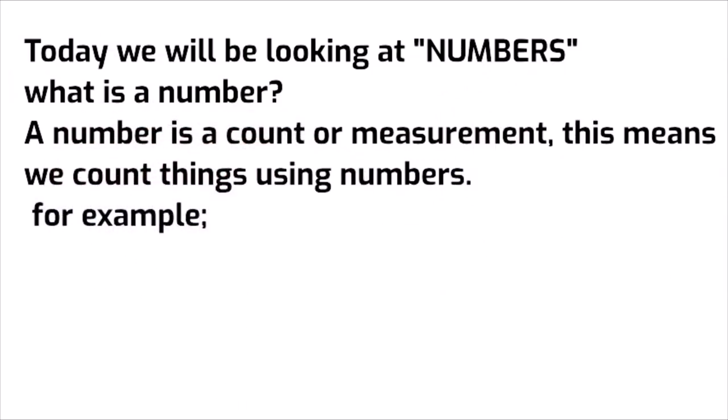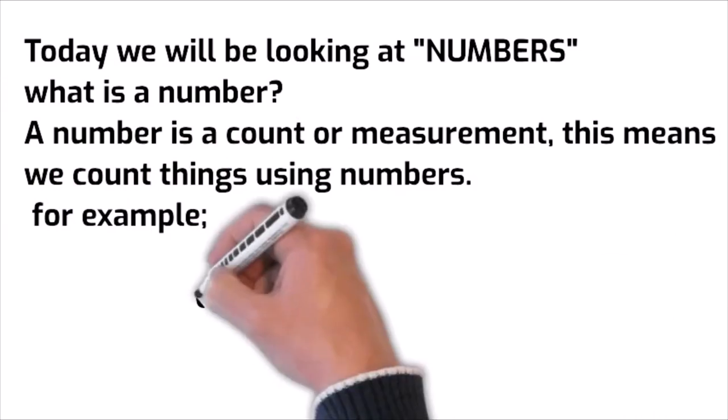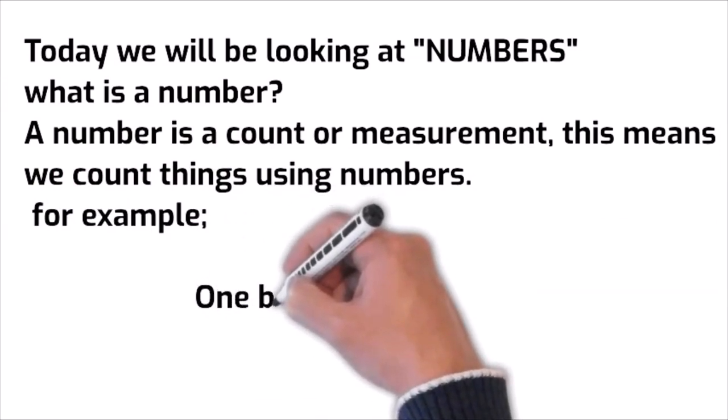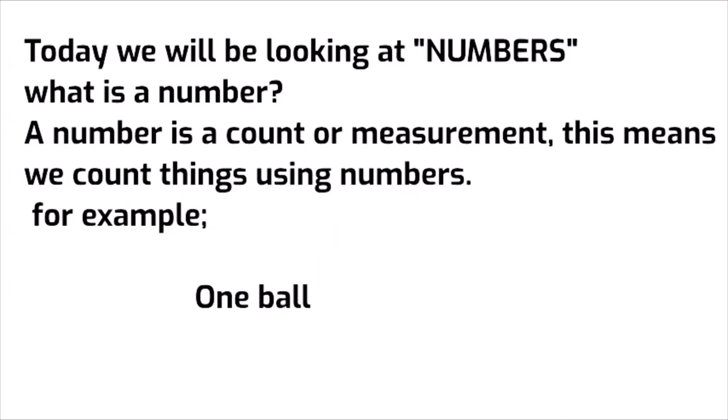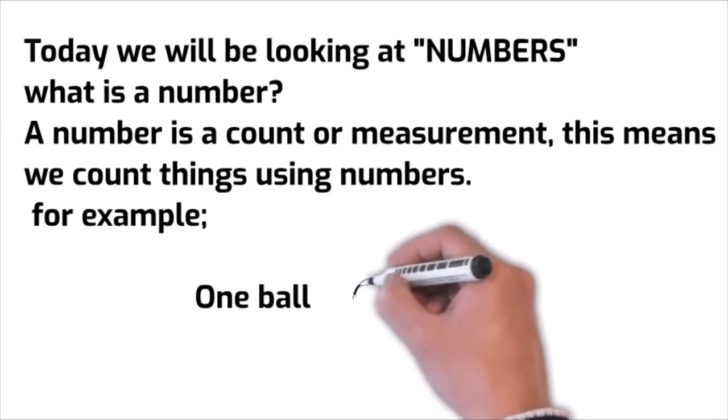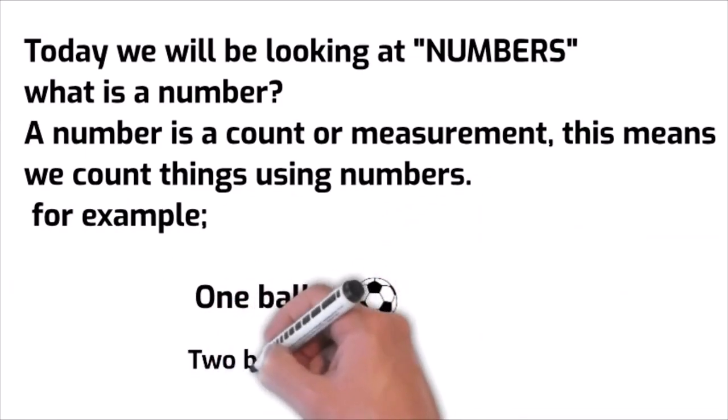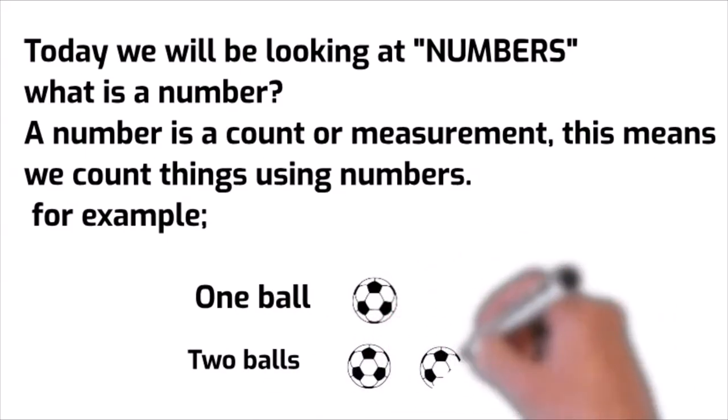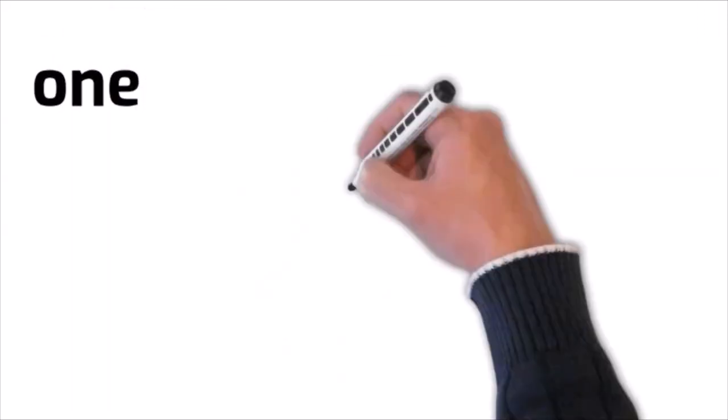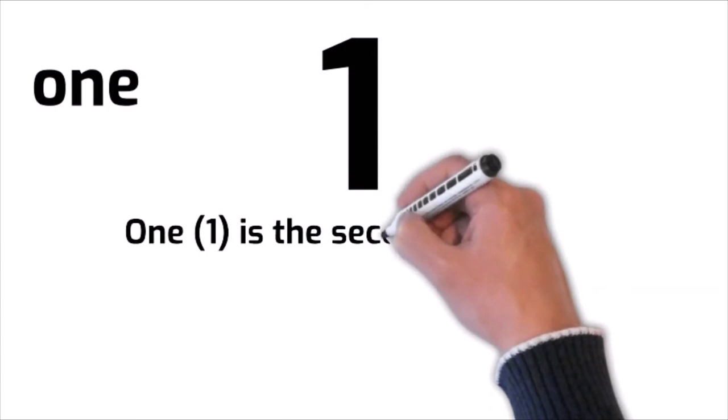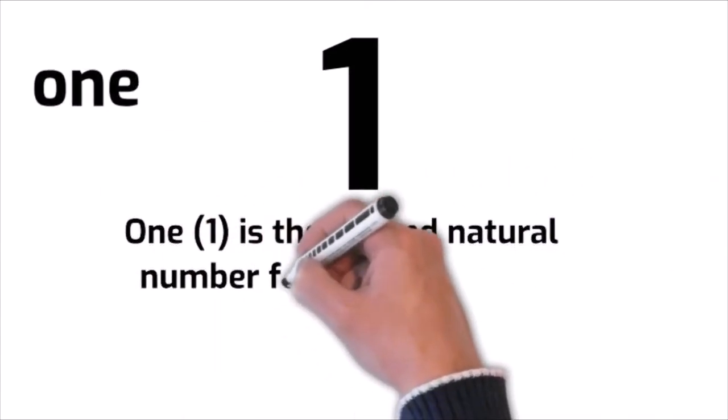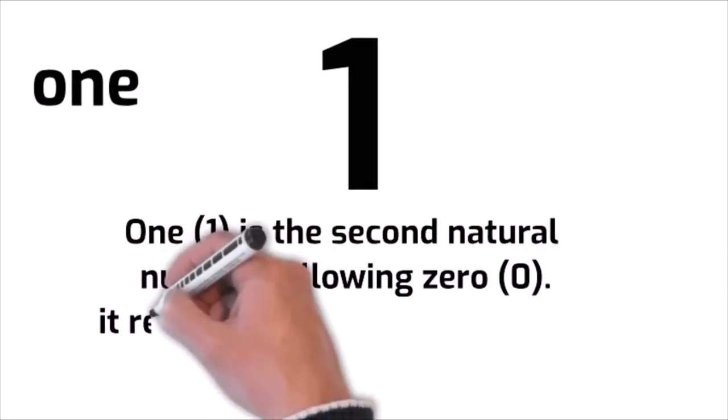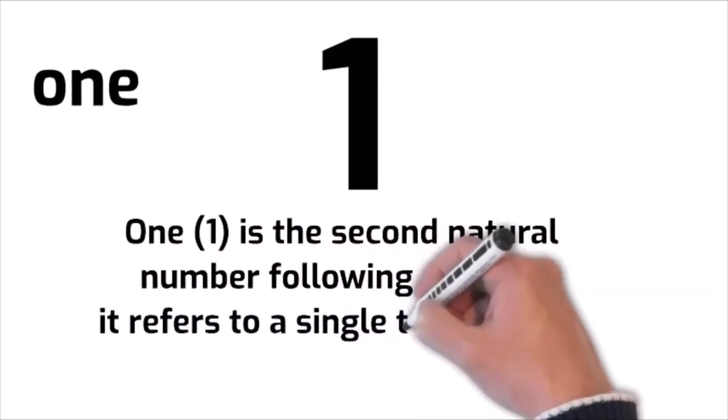For example, one ball. Two balls. One is the second natural number following zero. It refers to a single thing or unit.